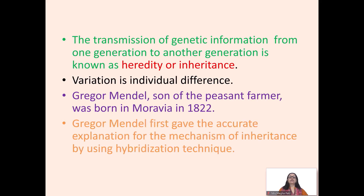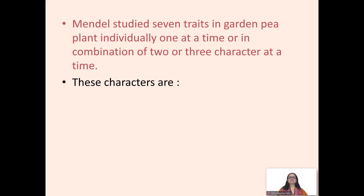John Gregor Mendel first gave the accurate explanation for the mechanism of inheritance by using hybridization techniques. Mendel studied seven traits in the garden pea plant individually — one at a time, or in combination of two or three characters at a time.